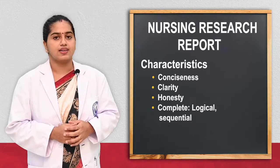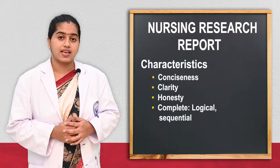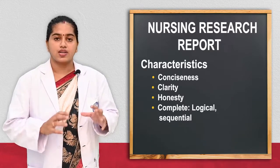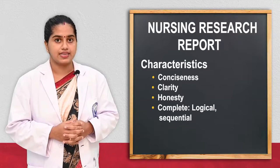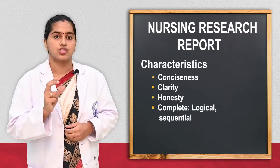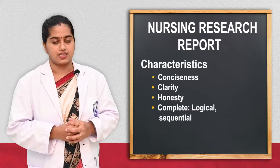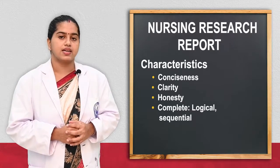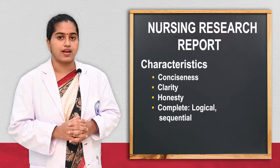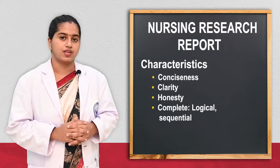Next we will see what are the characteristics of the nursing research report. First one is conciseness — conciseness means brevity, shortness should be there. Whatever the comprehensive research content the researcher has done, it has to be made in a concise or short manner. Then the readers will be able to understand it very easily. Second one is clarity — the content of the research report has to be clear-cut information so the readers will be very much benefited with the information or knowledge.